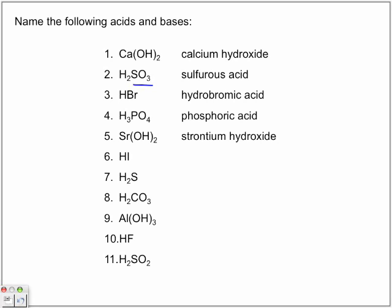Next one. HI is a binary acid. So, it's hydroiotic acid. Next one. We looked at this one before. It's hydrosulfic acid. Binary. Notice how all the binary ones start with hydro. All the bases end in hydroxide. And all the polyatomics, we have to look at its derivatives.